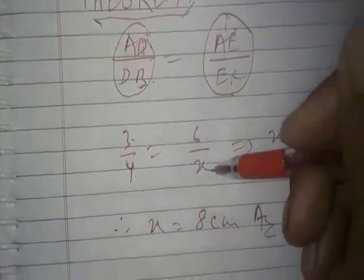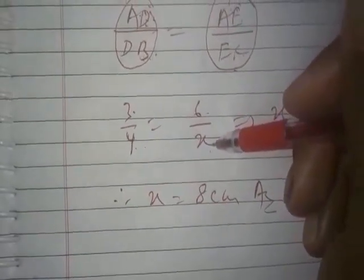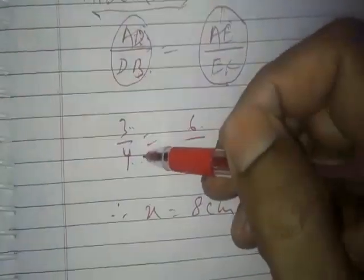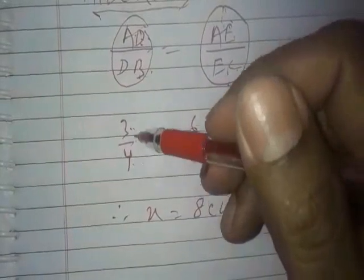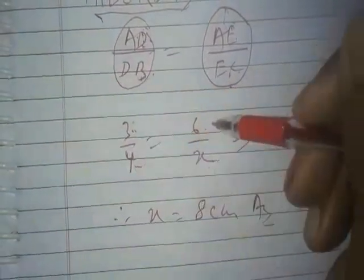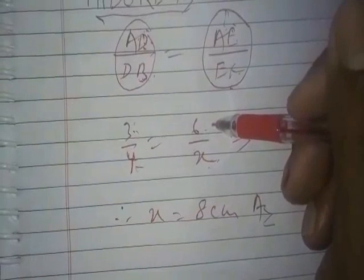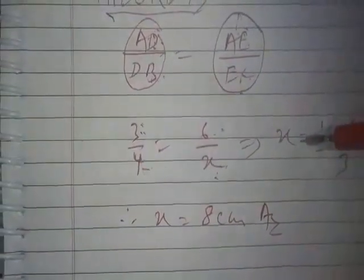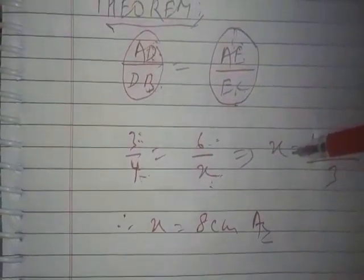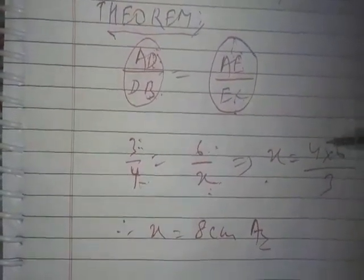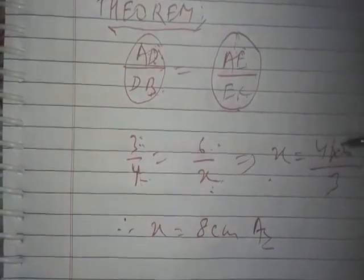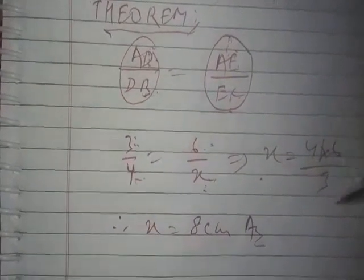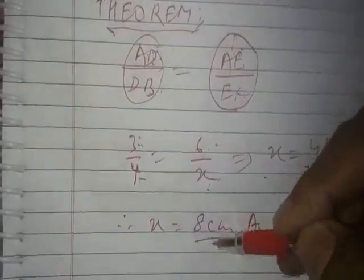To find the value of X, we simplify. Taking X to the LHS and doing cross multiplication, 3/4 moves to the RHS giving 4 in the numerator and 3 in the denominator. With simplification we get X equals 8 cm.